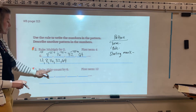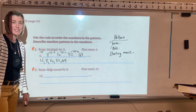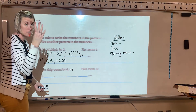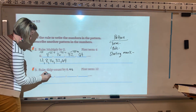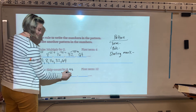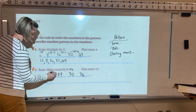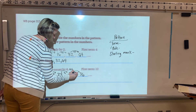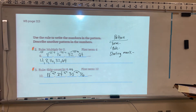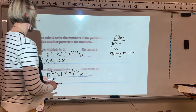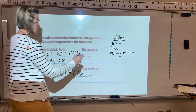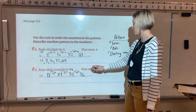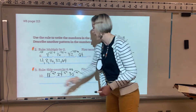The rule is skip count by 6, which is the same as add 6. Starting at 12: 12, 18, 24, 30, 36. We have a starting mark of 12, a rule of skip count by 6, and the terms listed show how many we need. That brings us to our test question, which is specific for my class.